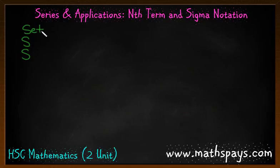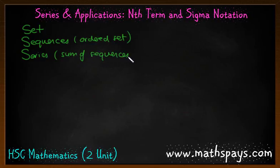The first one was a set, which is a collection of objects or terms. The second one was the sequences, which was the ordered set or ordered collection of terms. And then we have our series, which was our sum of sequences. That was the basic understanding from last lesson.